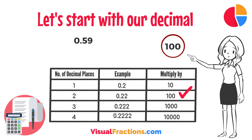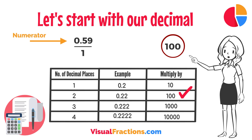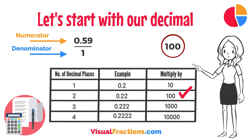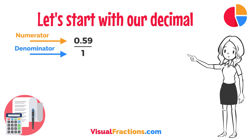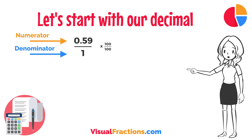To convert this decimal into a fraction, you initially put it over 1, essentially treating the decimal as the numerator in a fraction where the denominator is 1. This sets up the conversion process where we multiply both the numerator — the decimal — and the denominator, 1, by 100 because there are two decimal places.